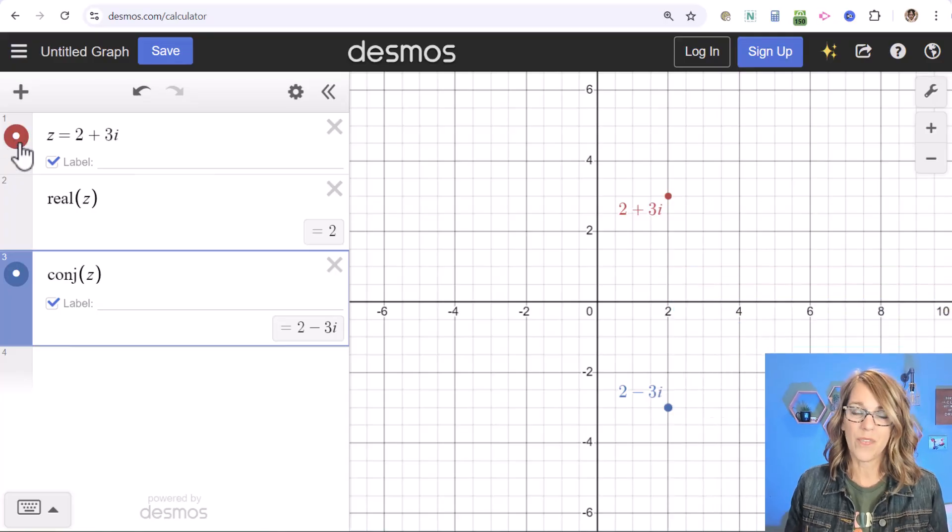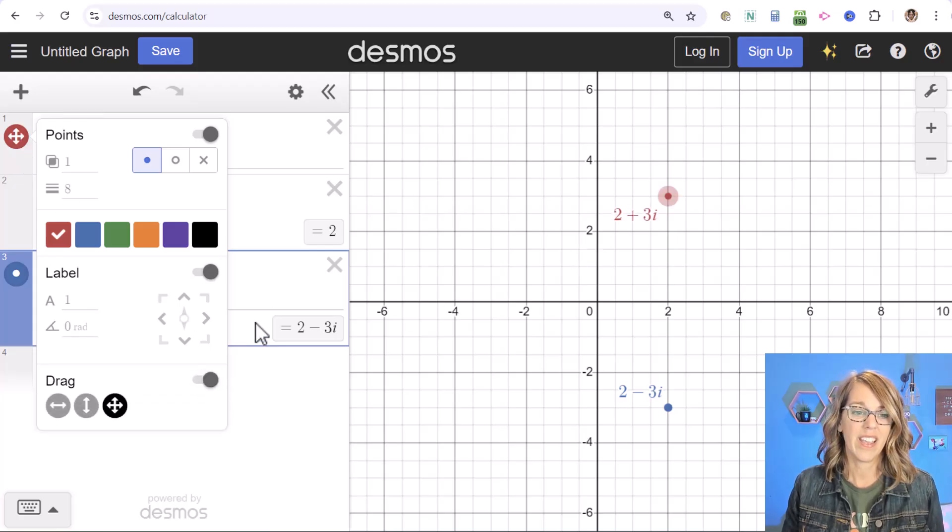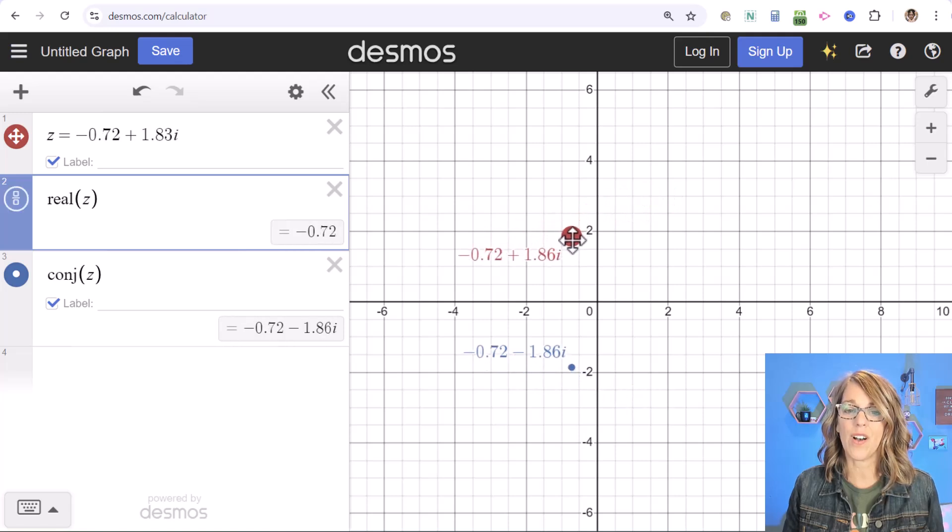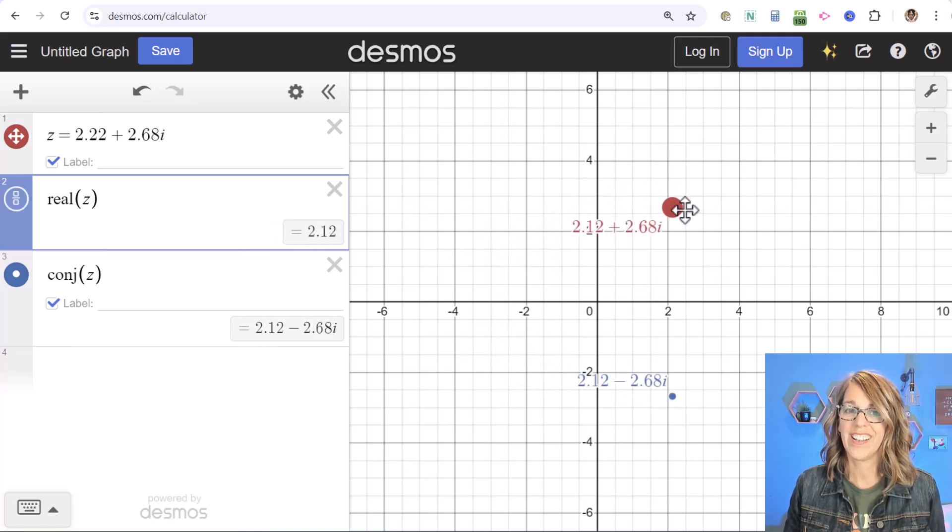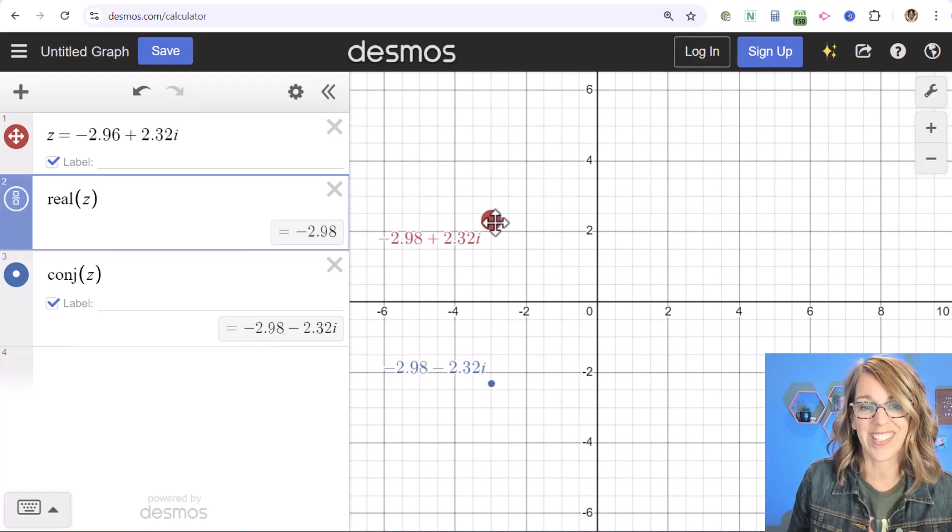I'm going to put this first value z on drag. So pressing and holding, let's go ahead and turn drag on. Click off of there. And as I drag this around notice how it also changes the conjugation. And we can see that this is really a reflection across that horizontal axis.